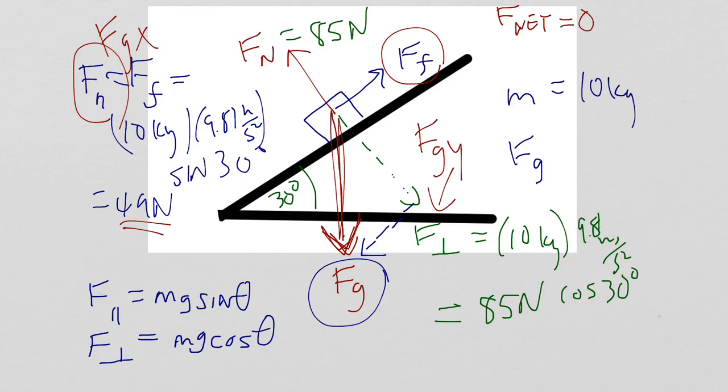It's our own weight, or in the case of this object, it is its own weight that would have it sliding down the incline. But, since 49 newtons is the Fgx, 49 newtons is Ff, they cancel out, and the F net is 0.